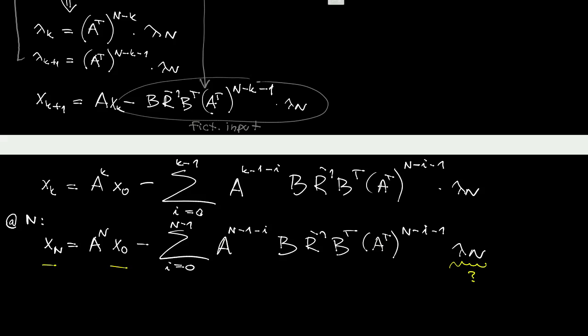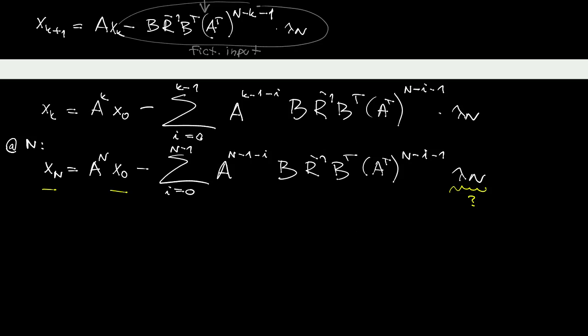So we can use this equation to find the solution for lambda at the end of the control horizon. In order to make the formulas more compact, we will denote the whole sum here as G_0n_R. And then lambda at the end of the interval can be written like this.